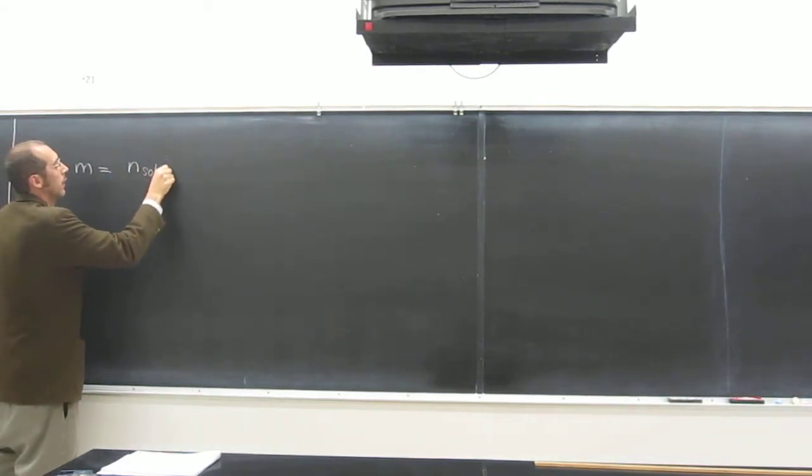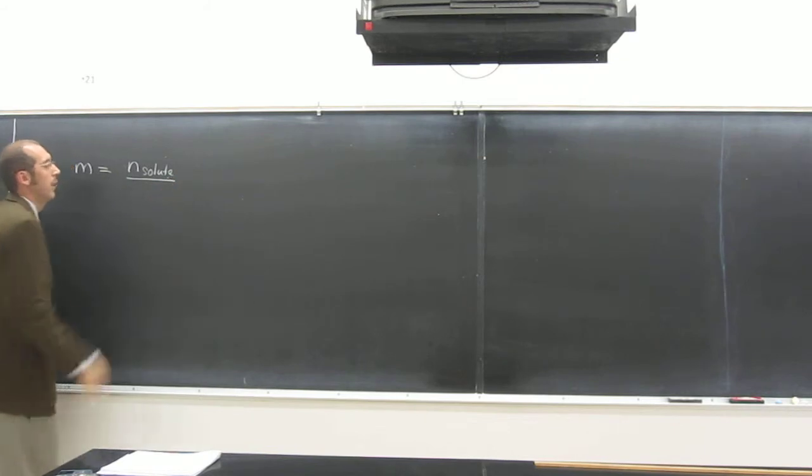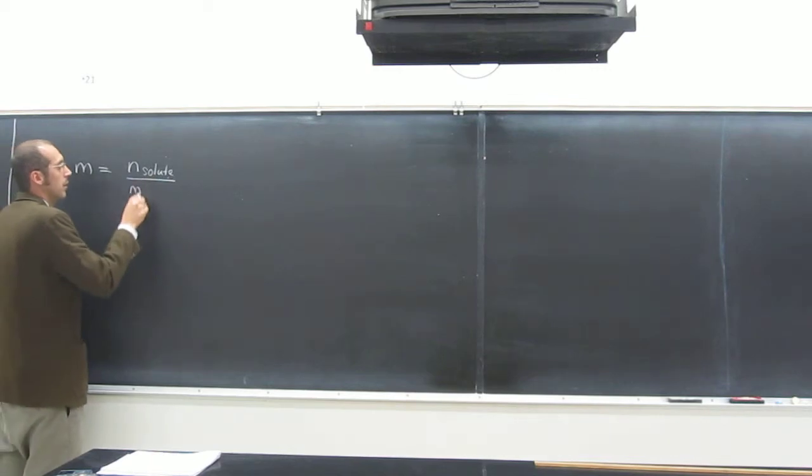So molality is a concentration unit. Remember, it's little m, and it's the same as molarity, with the number of moles of solute in the numerator. But instead of volume of solution in the denominator, it's going to be the mass of the solvent in kilograms. So mass in kilograms of the solvent.